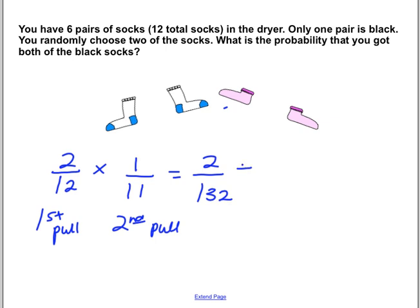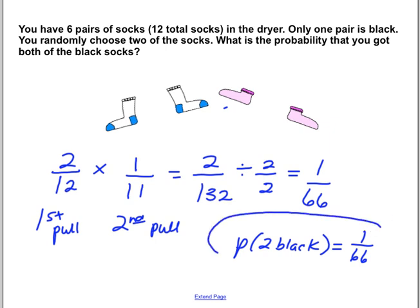You're going to divide these both by 2 on the top and the bottom. And that would equal 1 out of 66. So if we were to write down P event, the event would be 2 black, end of parentheses. And that would be a 1 in 66 chance of that occurring. And that would be your final answer.